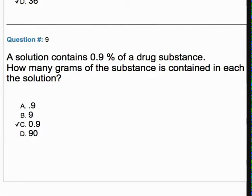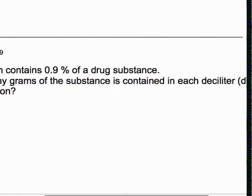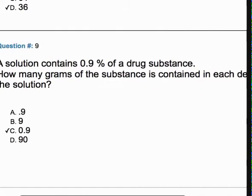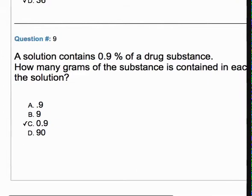0.9 percent of anything in water in each deciliter. A deciliter is 100 cc's, so the definition of a percent here is how many grams are in 100 cc. So if it's 0.9, it means there's 0.9 grams in 100 cc, or 900 milligrams.